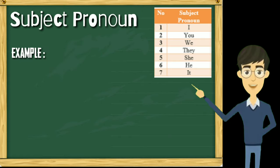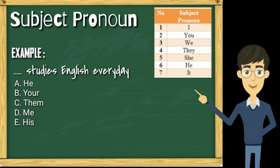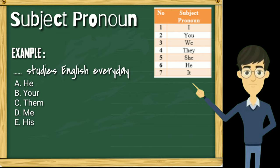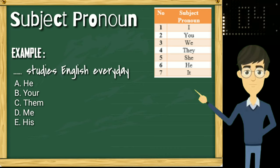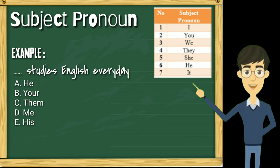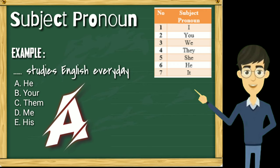Mari kita lihat contoh penggunaannya dalam kalimat. '... studies English every day.' Pada kalimat ini kita jelas membutuhkan subject karena pelaku dalam kalimat belum ada. Siapa yang belajar bahasa Inggris setiap hari? Jika ada pilihan jawaban A: he, B: your, C: them, D: me, E: his — yang manakah yang paling tepat? Ya, jelas — bisa kita lihat dari tabel tadi, yang masuk ke jenis subject pronoun adalah 'he'. He adalah pilihan paling tepat.